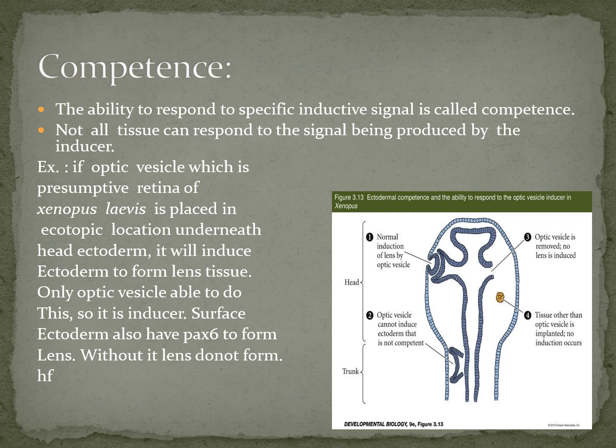For example, if the optical vesicle, which is the presumptive retina of Xenopus laevis, is placed in an ectopic location — meaning other than its original location — underneath the head ectoderm, it will induce the ectoderm to form lens tissue. However, head ectoderm only responds if it has Pax-6. It can only form lens tissue if it has Pax-6; without it, lens does not form.